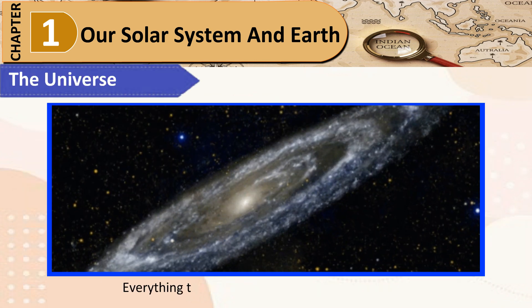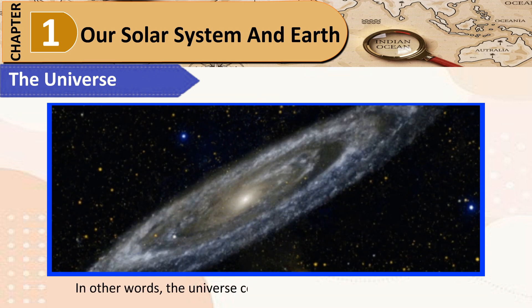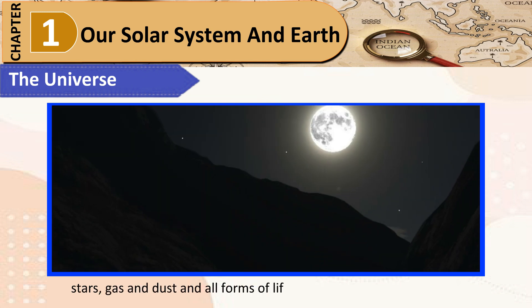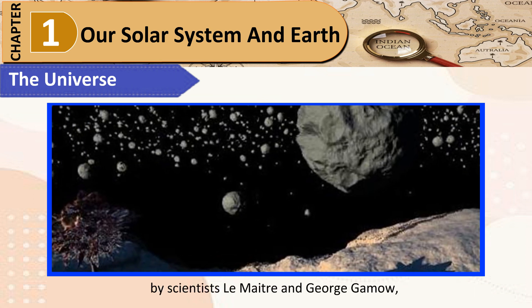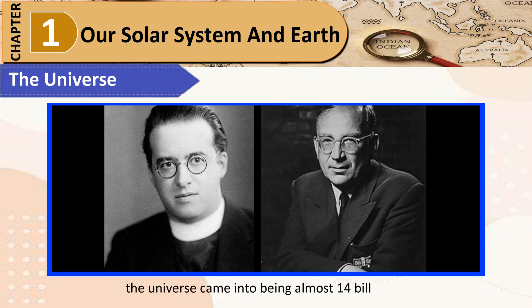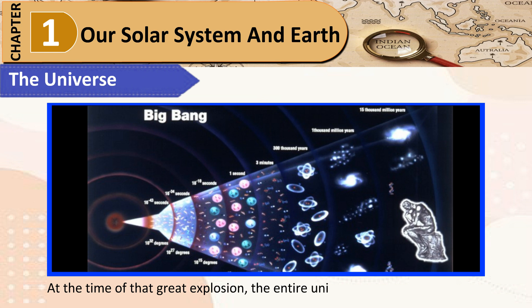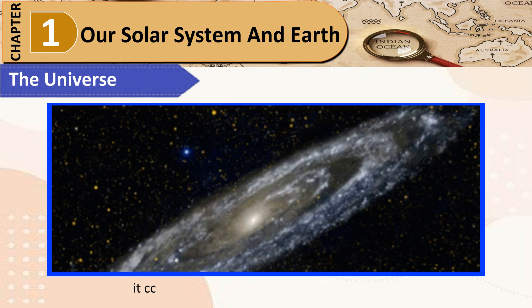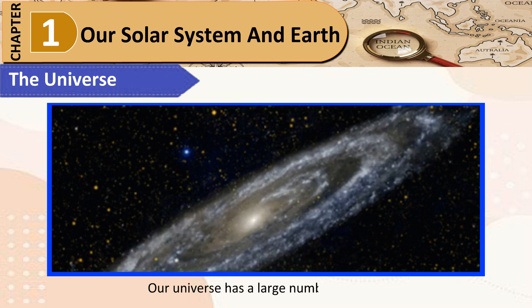The Universe: Everything that exists in space is part of the universe. The universe consists of the Sun, the Moon, the Earth, stars, gas and dust, and all forms of life. According to a theory proposed by scientists Maitre and George Gamow, the universe came into being almost 14 billion years ago following a gigantic explosion called the Big Bang. At that time, the entire universe was a hot dense bubble. Gradually, over millions of years, it cooled down and expanded to its present form. Our universe has a large number of galaxies.